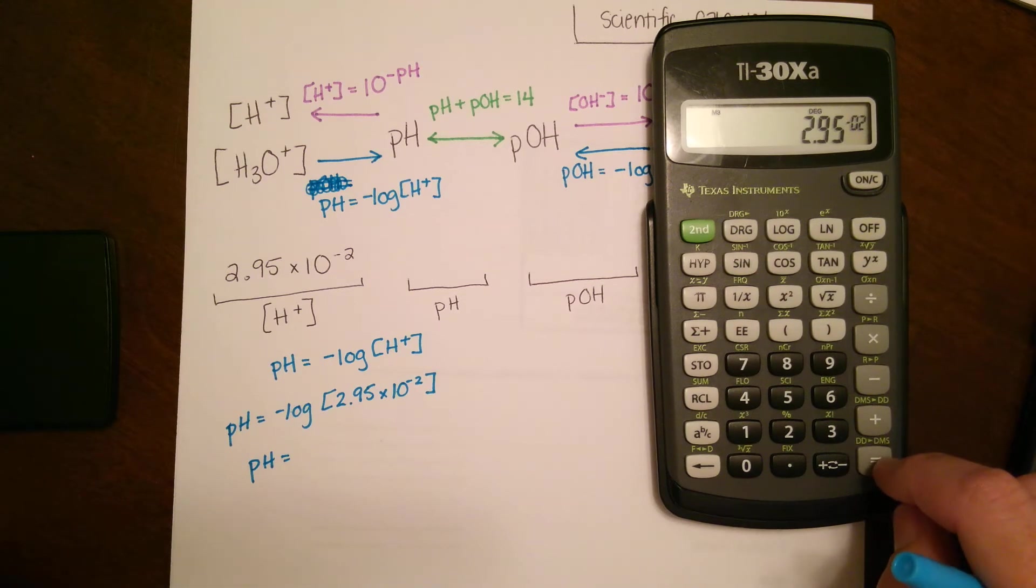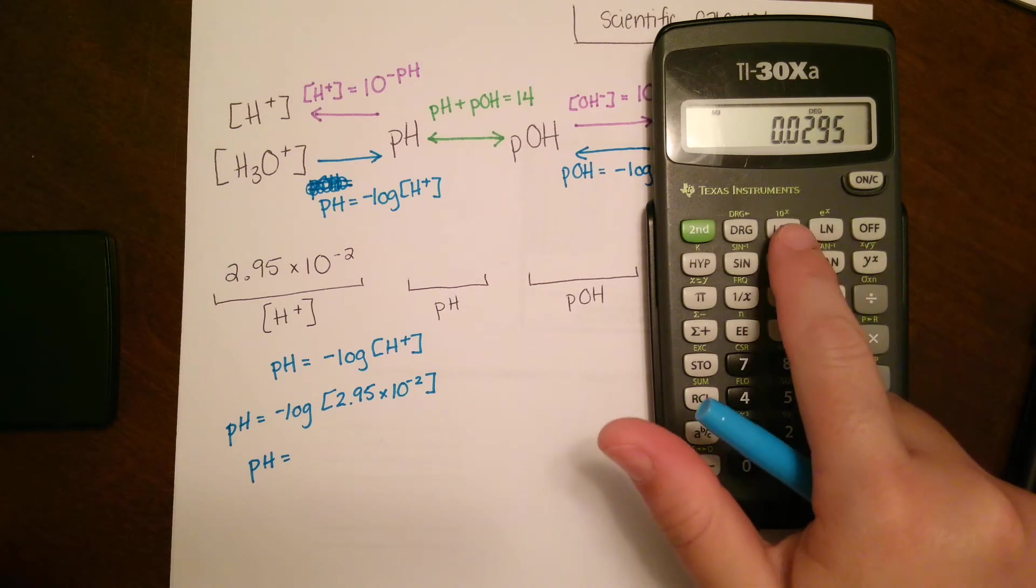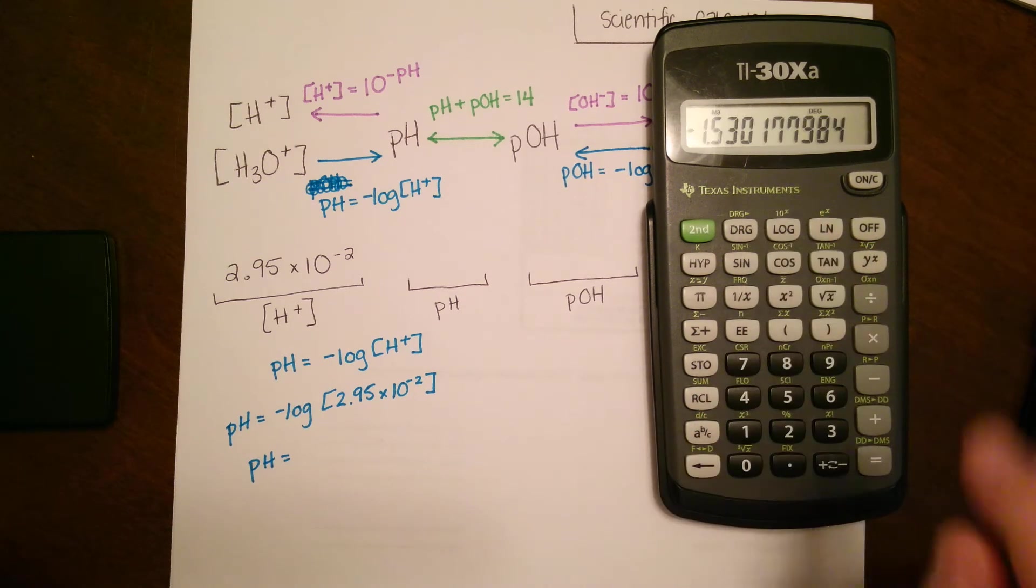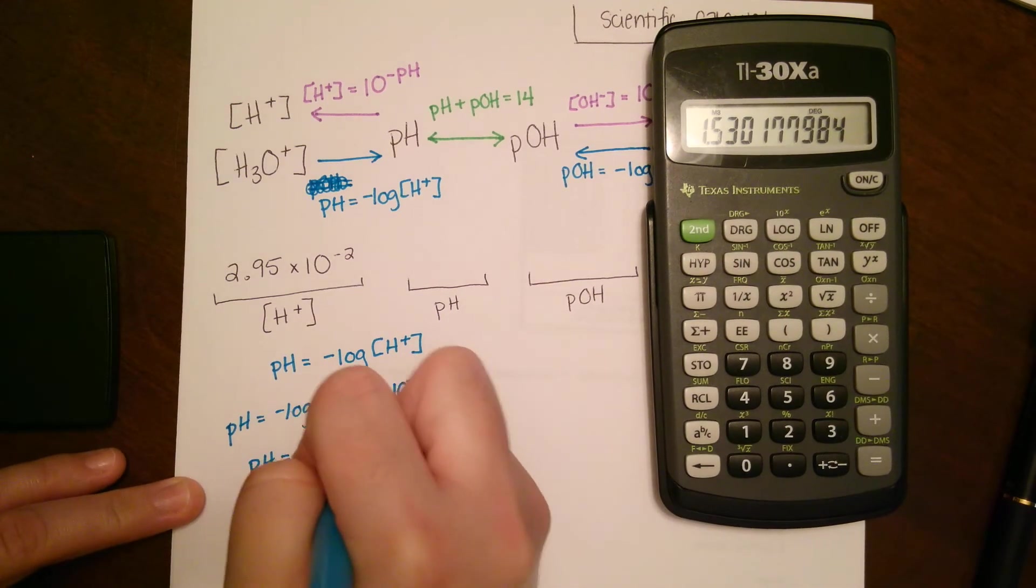You can hit enter if you want in between there. And then you're going to press log and then negative. So it's a little bit shuffled. So you get 1.53 as your pH.